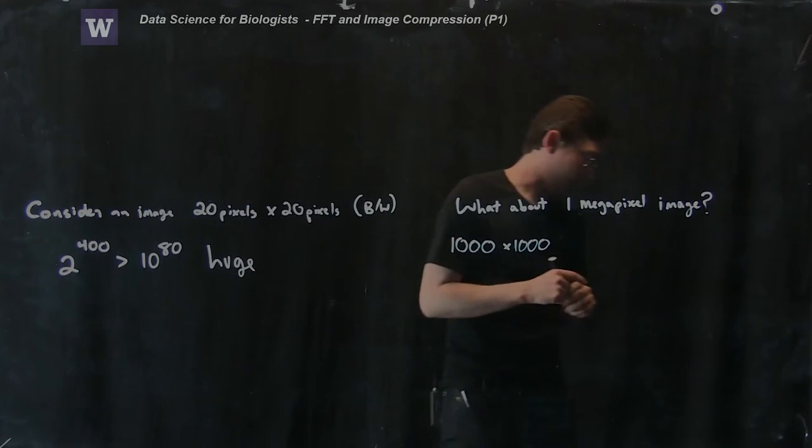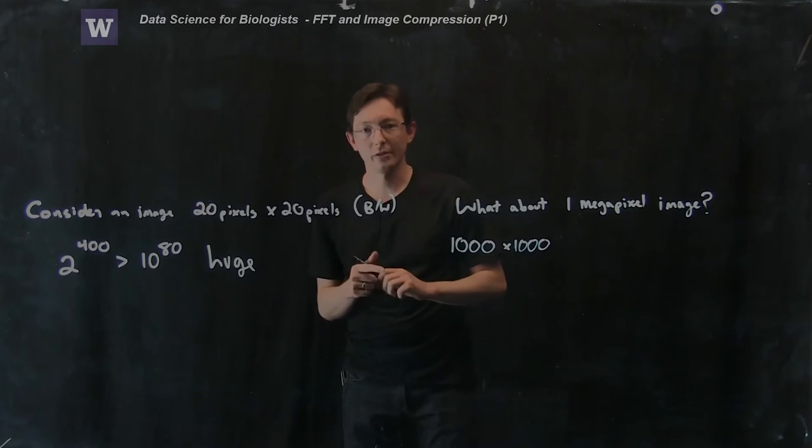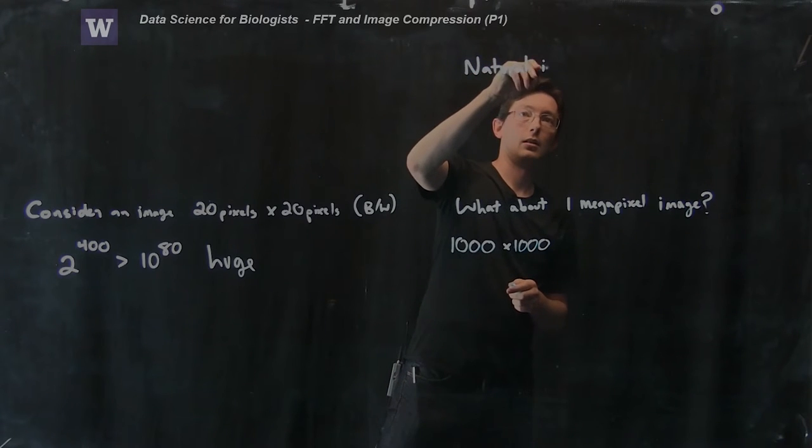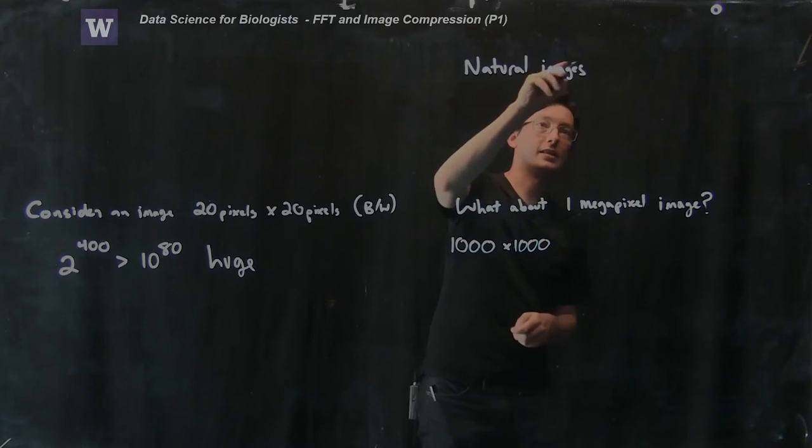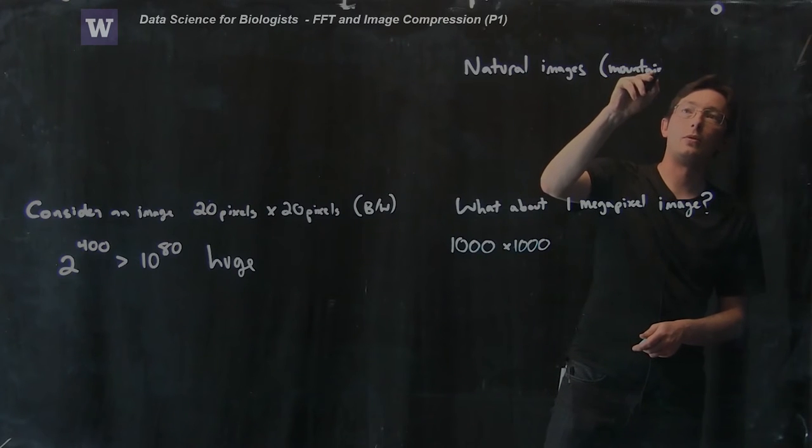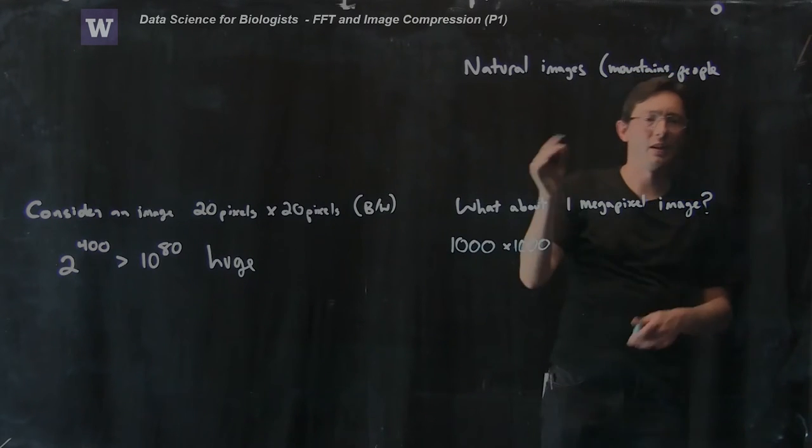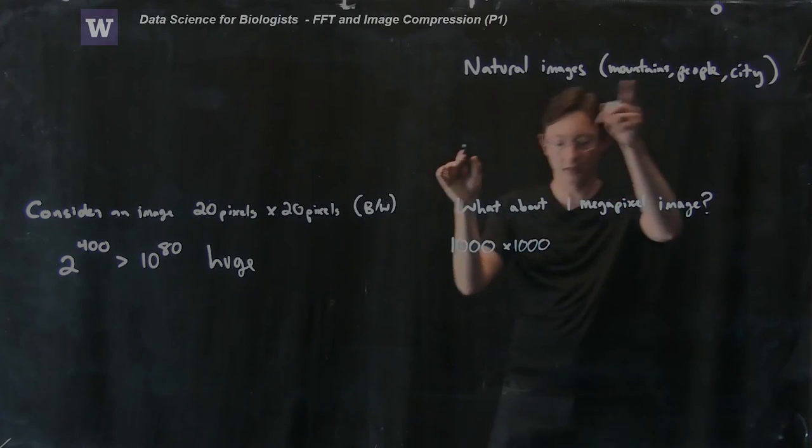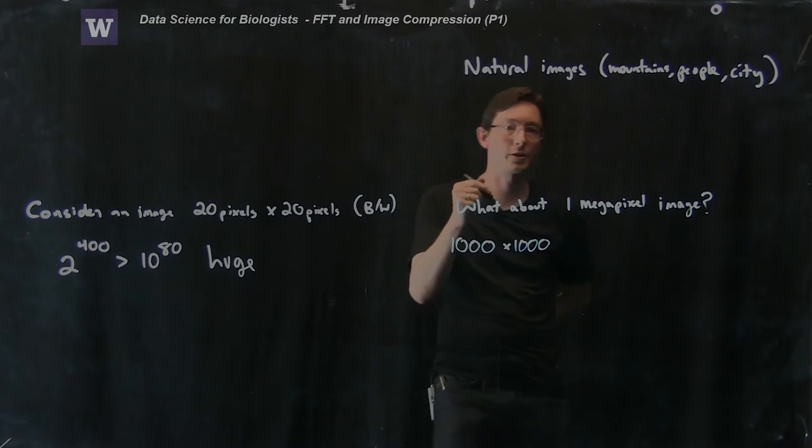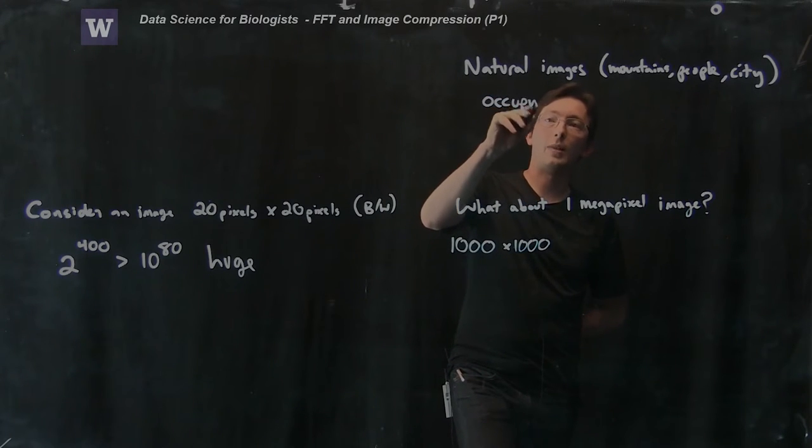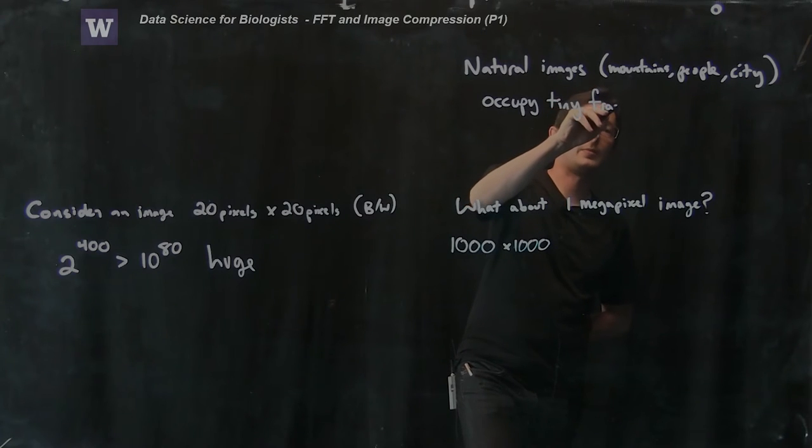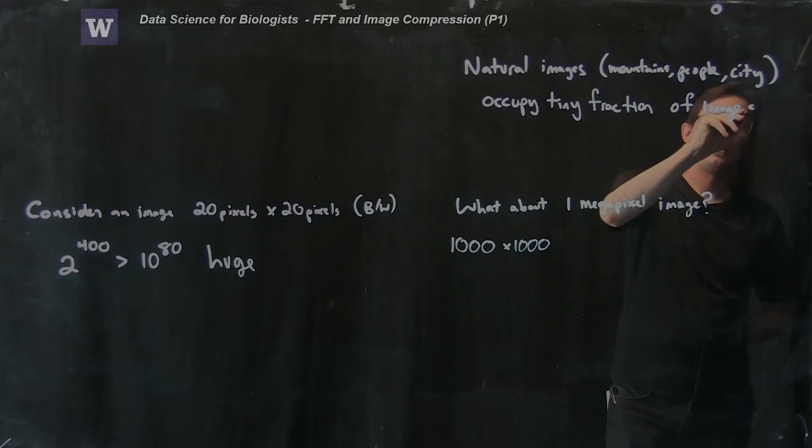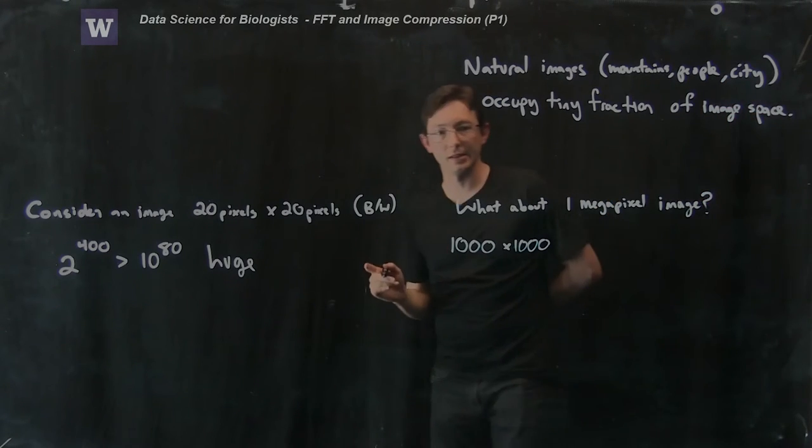But it turns out that natural images, things that we see on a daily basis, so natural images, this is like mountains or people. I mean, natural doesn't mean it has to be in nature. It could be a city or a circuit board or something, just anything that you would see with your own two eyes. Natural images, turns out that they occupy a tiny fraction of image space.